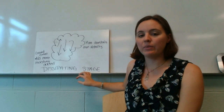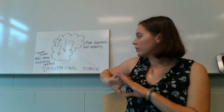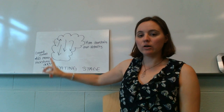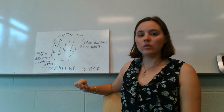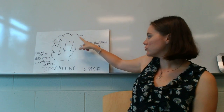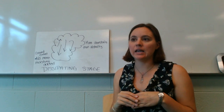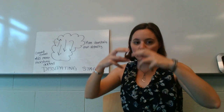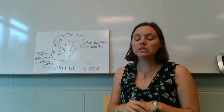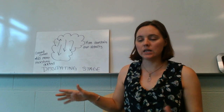Then we have our dissipating stage. After the ground has been cooled, we don't have any more warm air rising or moisture to be added to the clouds. So we have more downdrafts than updrafts. During this stage, the clouds are just getting rid of the rest of their moisture — we'll still expect heavy rains, but it's going to taper off towards the end.